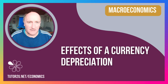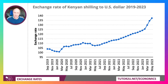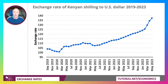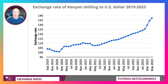Welcome back. Let's think about the effect of a fall in a nation's currency. Here's the chart showing the Kenyan shilling against the dollar. Back in 2020, you would have had to give up 100 to 105 shillings to buy one US dollar, but by the end of 2023 that's gone up to 140. So the purchasing power of the shilling against the US dollar has gone down — in other words, the Kenyan currency has depreciated.